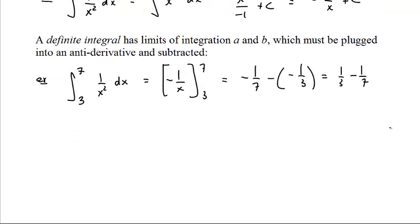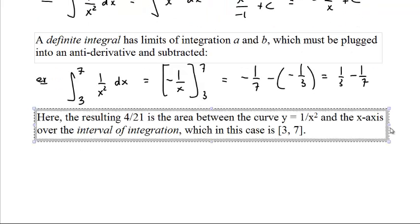4 21sts. That will come up. That is to say, now, the resulting 4 over 21 is the area between the curve, y equals 1 over x squared, and the x-axis over the interval of integration. We say that this is integrating from 3 up to 7, closed interval, including the point 3, including the point 7.